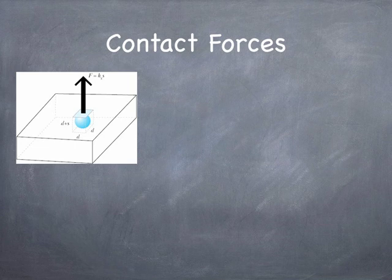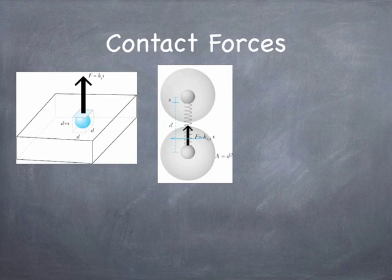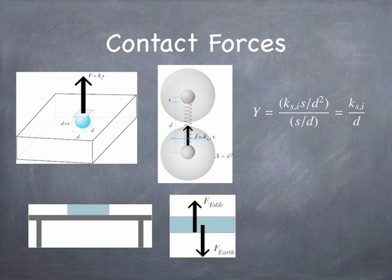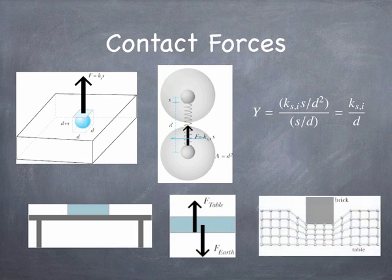Let's talk about contact forces. If I set something down on a surface, the surface is going to push back. On an atomic scale, when a force is applied to a material, the interatomic bonds shorten a little bit, and because they're shortening, those bonds push back with a force proportional to the change in distance between neighboring atoms — giving you a contact force. So if you set a brick on a table, the table pushes up and the Earth pulls down. On a microscopic scale, the table surface actually deforms, the interatomic bonds are compressed, and those compressed bonds push back up on the brick to produce a macroscopic normal force.